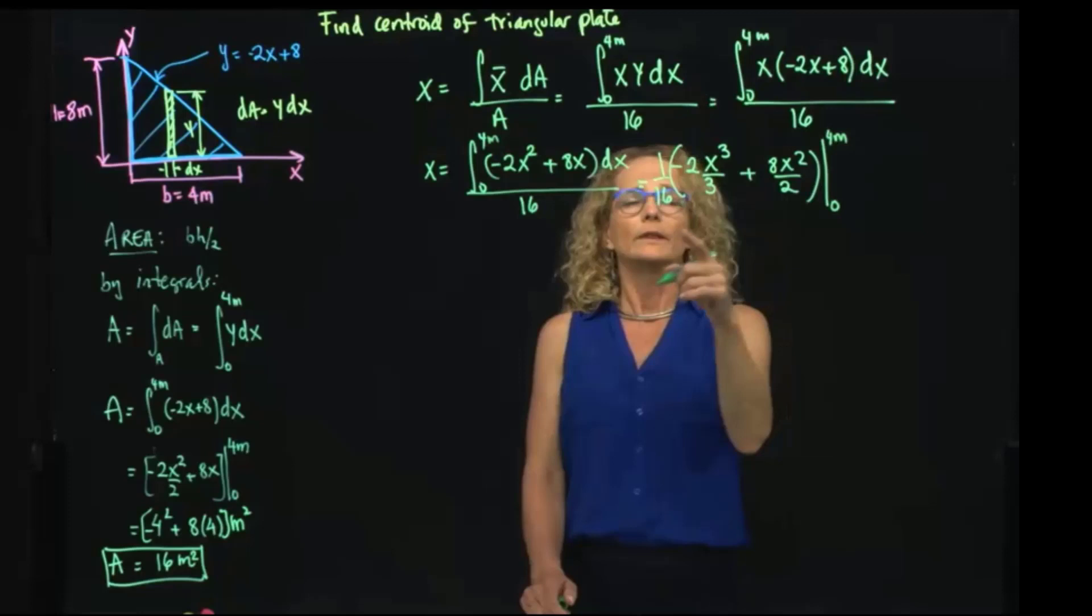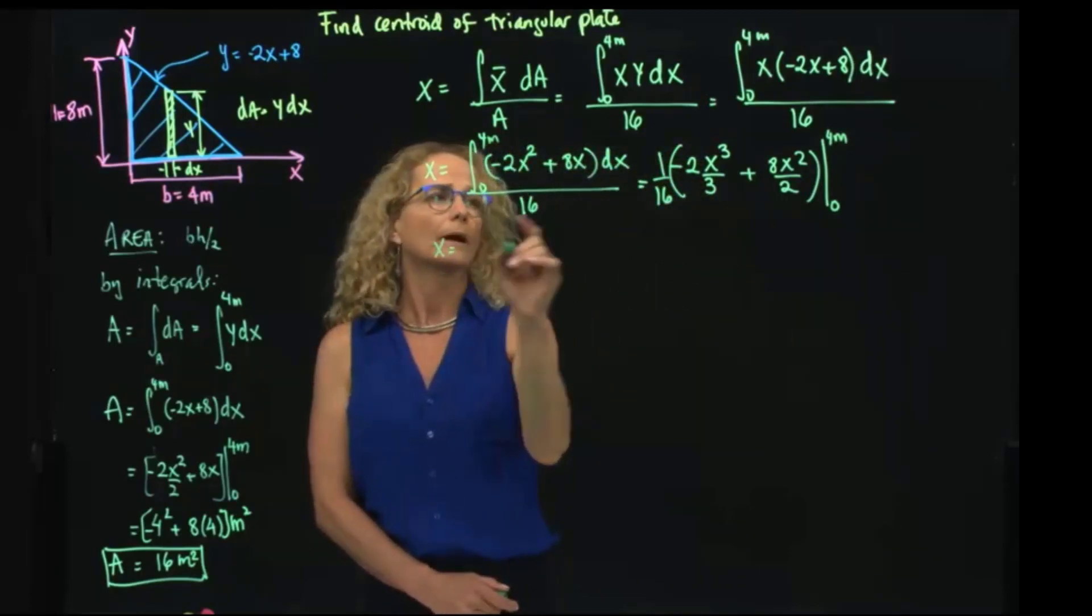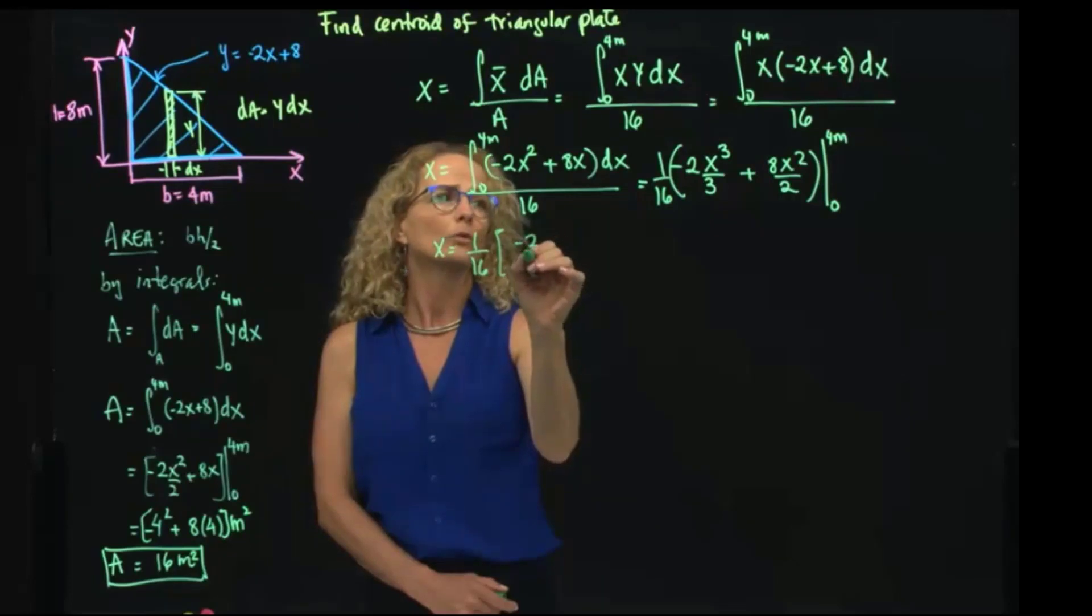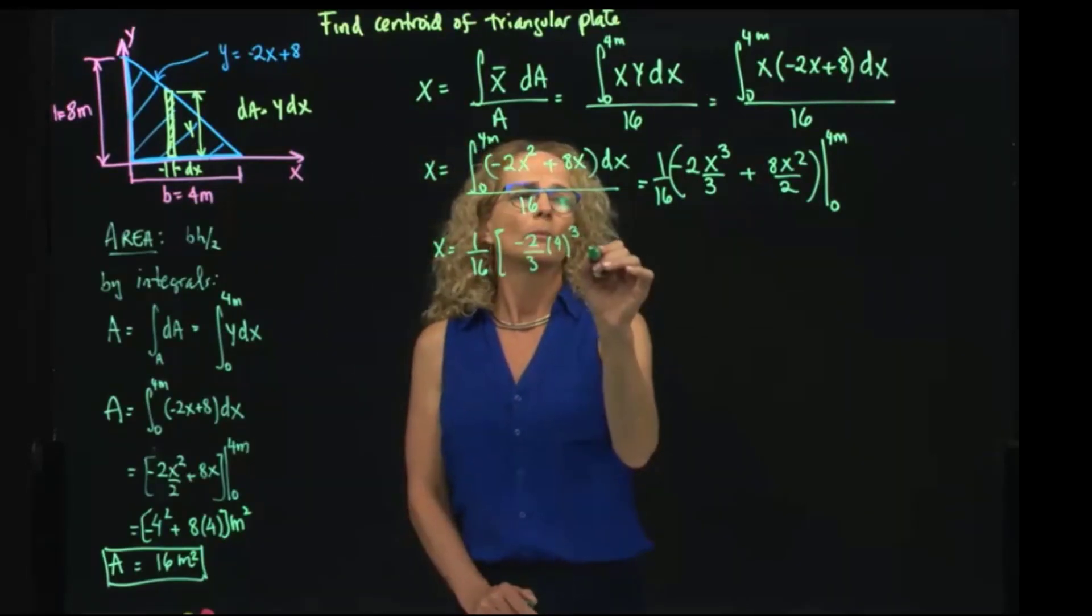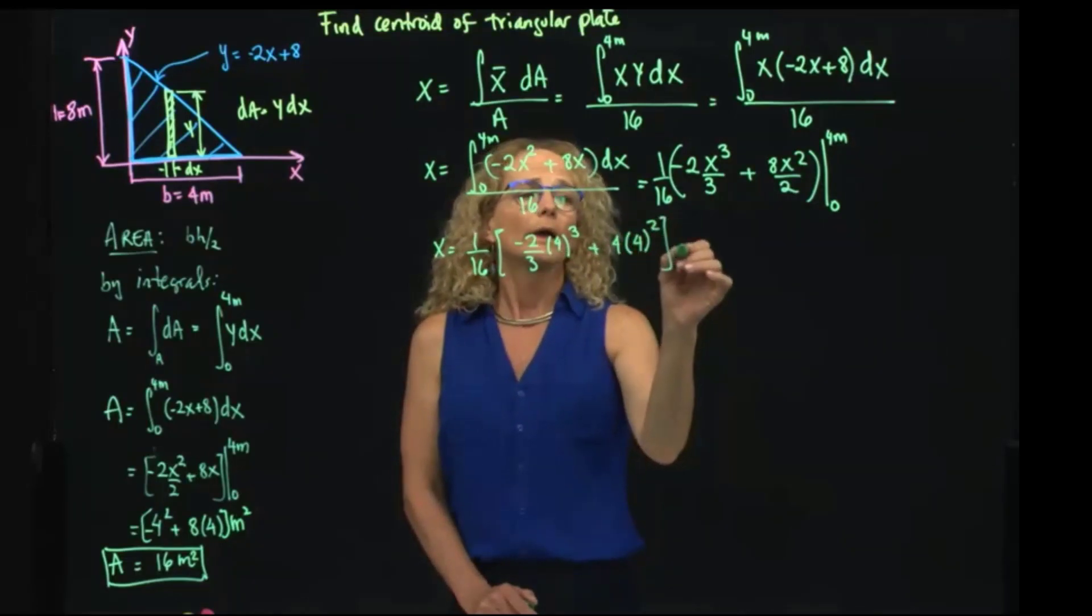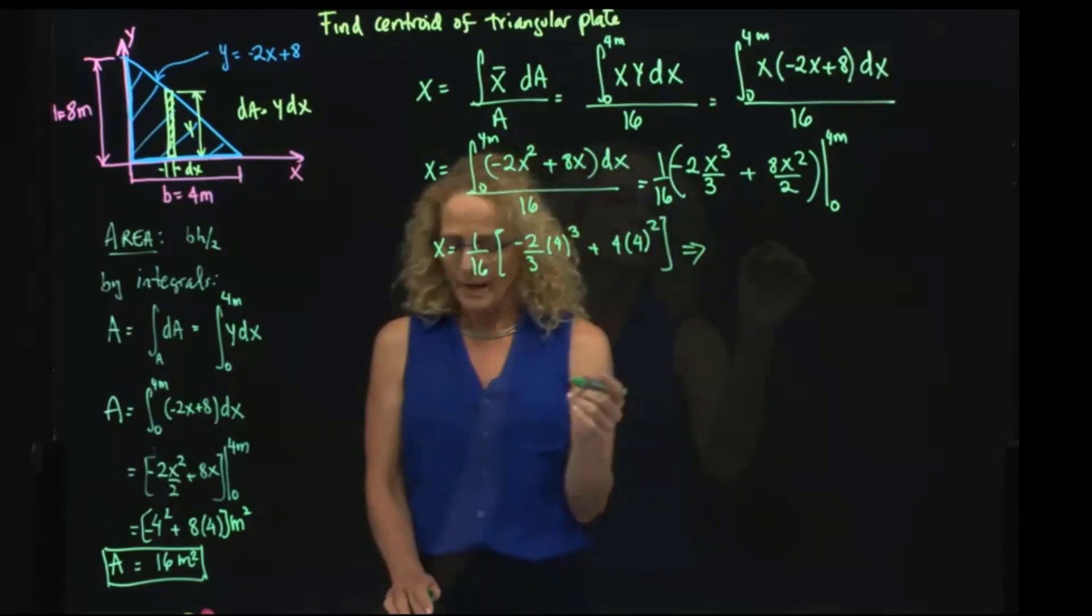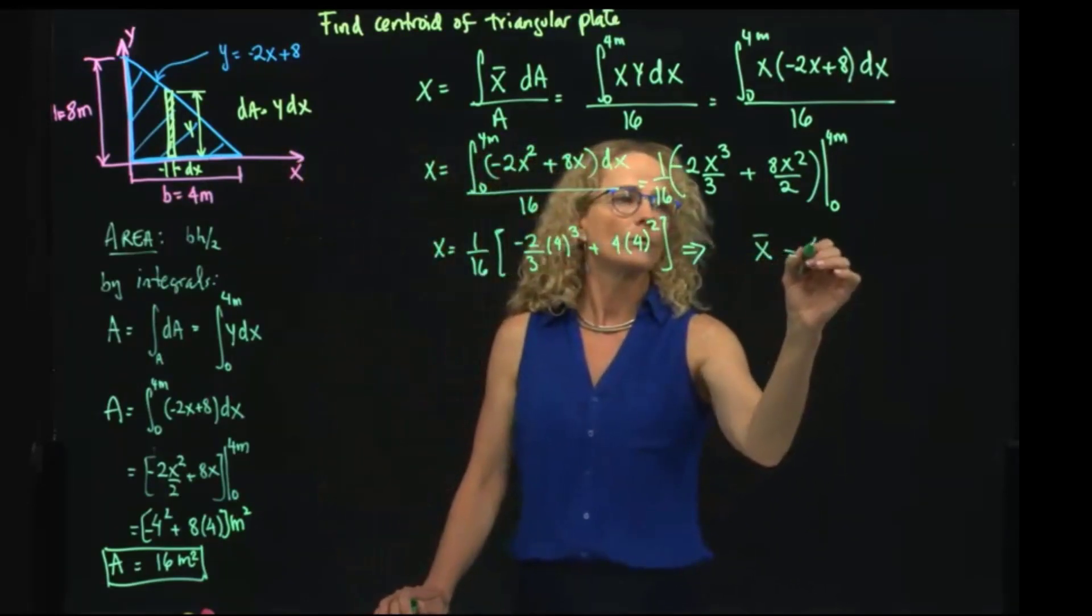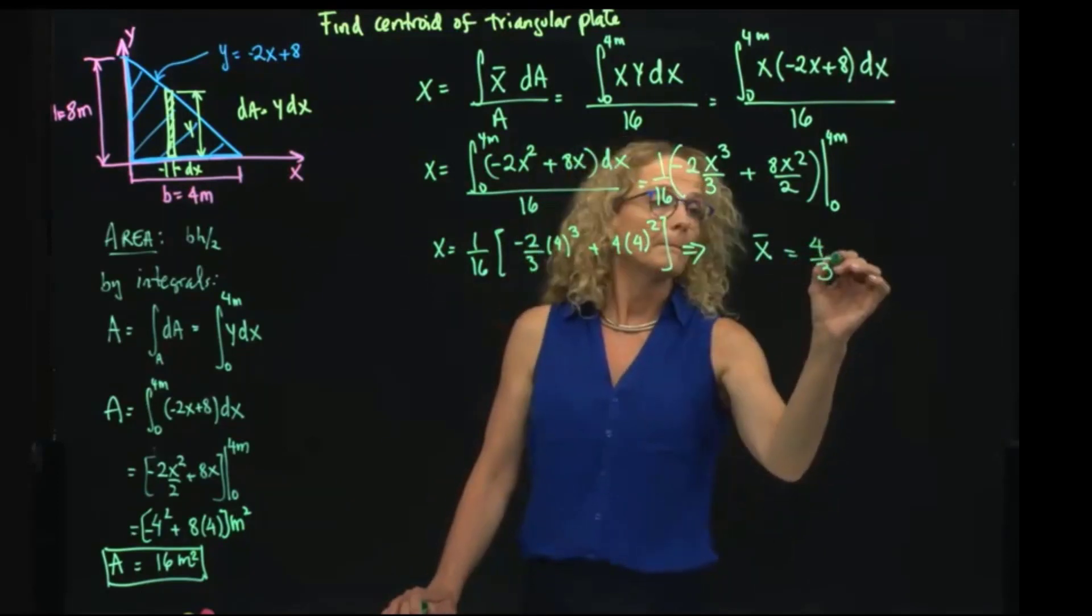When I evaluate that, I get 1 over 16 times negative 2 over 3 times 4 cubed plus 4 times 4 squared. If you evaluate all that, the centroid in X is equal to 4 over 3 meters.